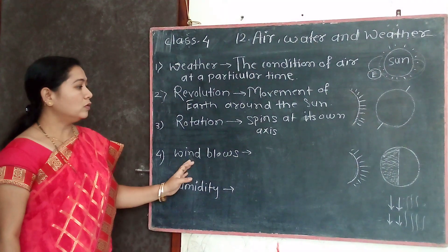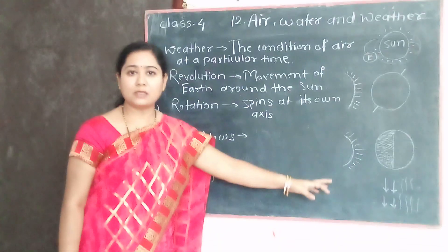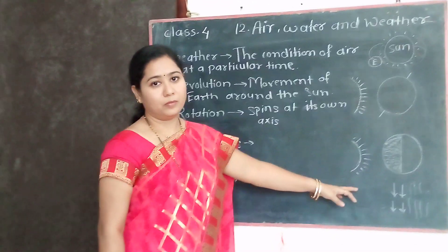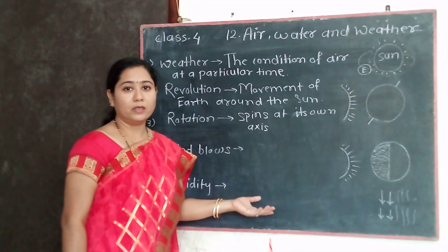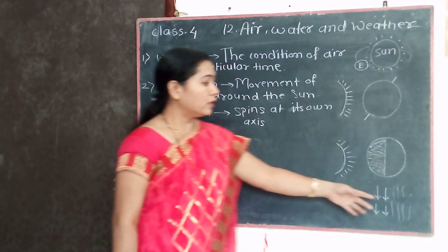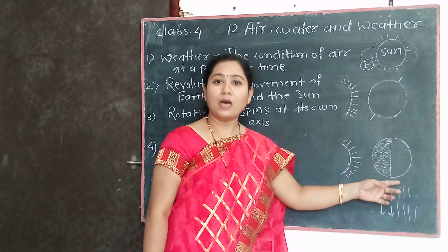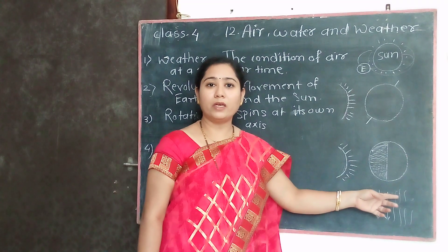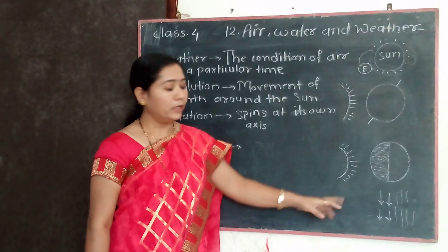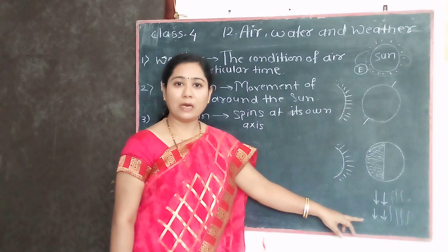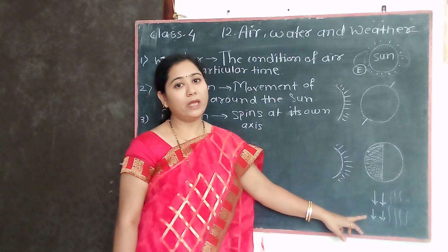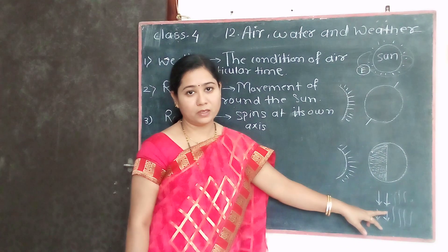Because of the heat of the sun, air gets heated up. Air becomes warmer and that warm air goes up, because warm air is lighter than cool air. And cool air comes down to take its place, because cool air is heavier than warm air.